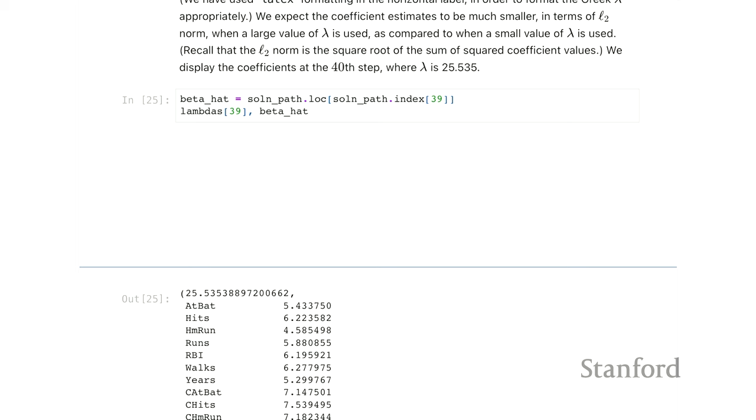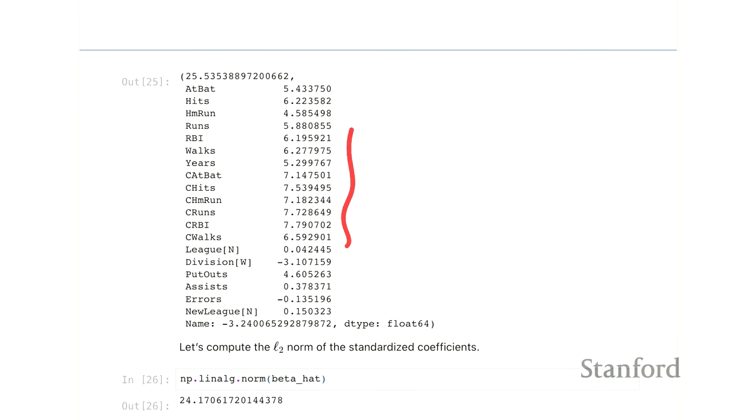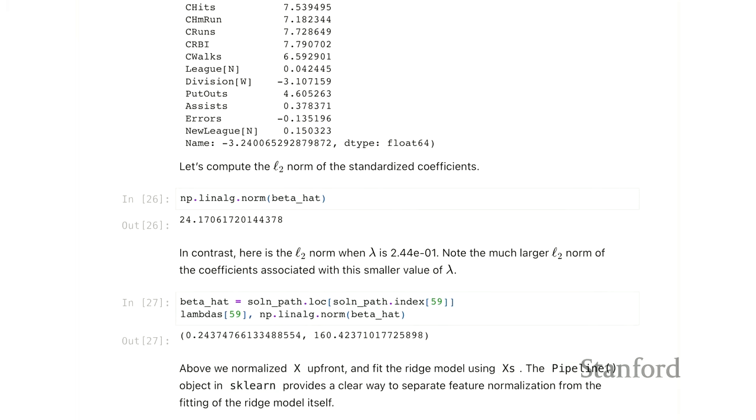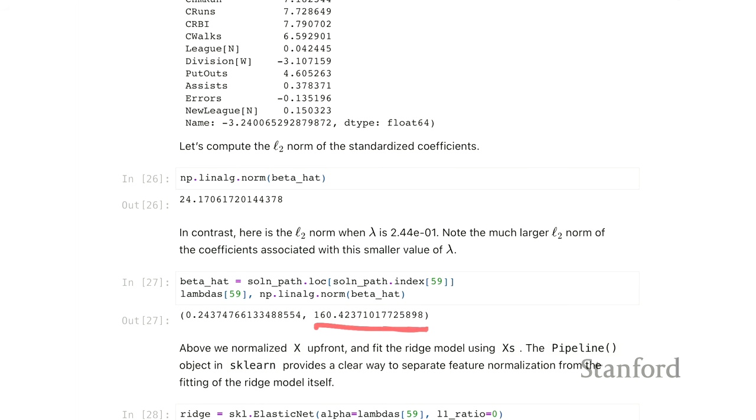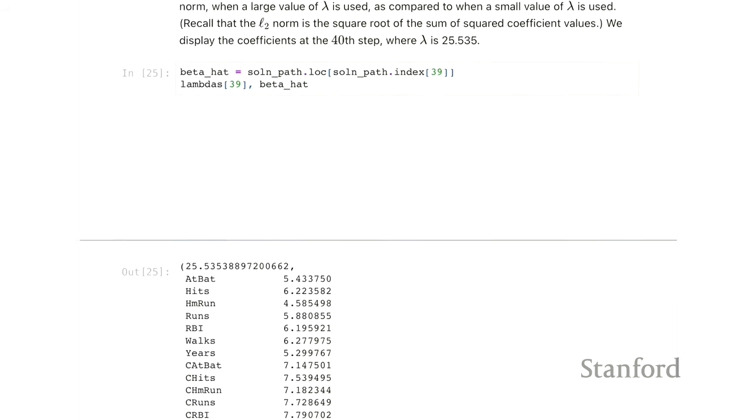Lovely plot. Okay. So you can extract individual coefficients, if you like, by looking at the solution path we constructed. And what we're going to see here is that for different values of lambda, so remember lambda is decreasing as we increase the index. So we'll compare lambda, the 40th entry, lambda 39, to the 50th, lambda 59. And what we should see is that at 59, we sort of relaxed the penalty so it should be a bit bigger. So we're just going to compute the norms at the two different values.